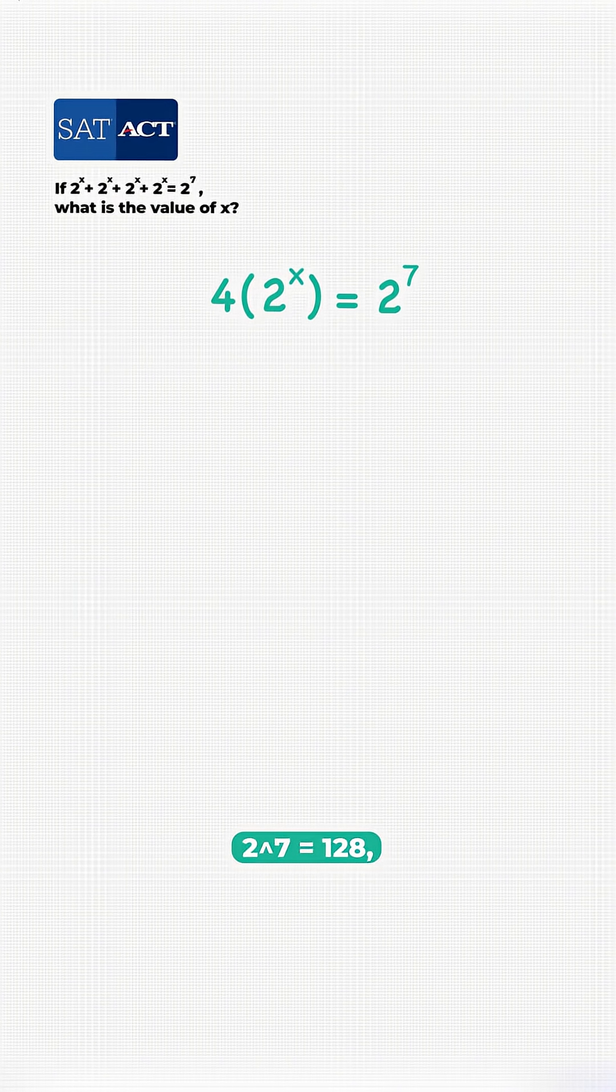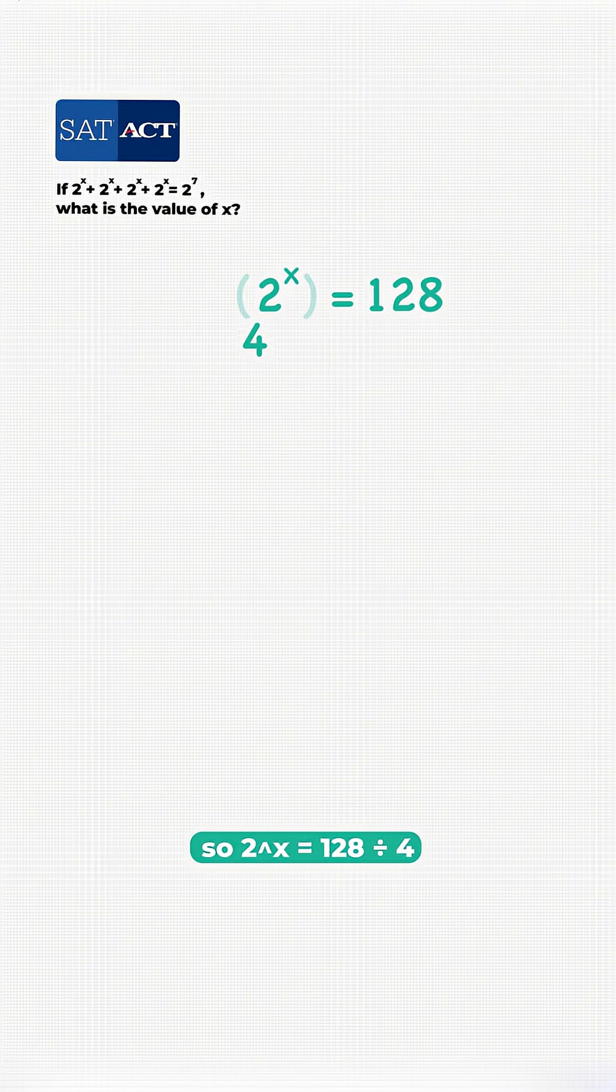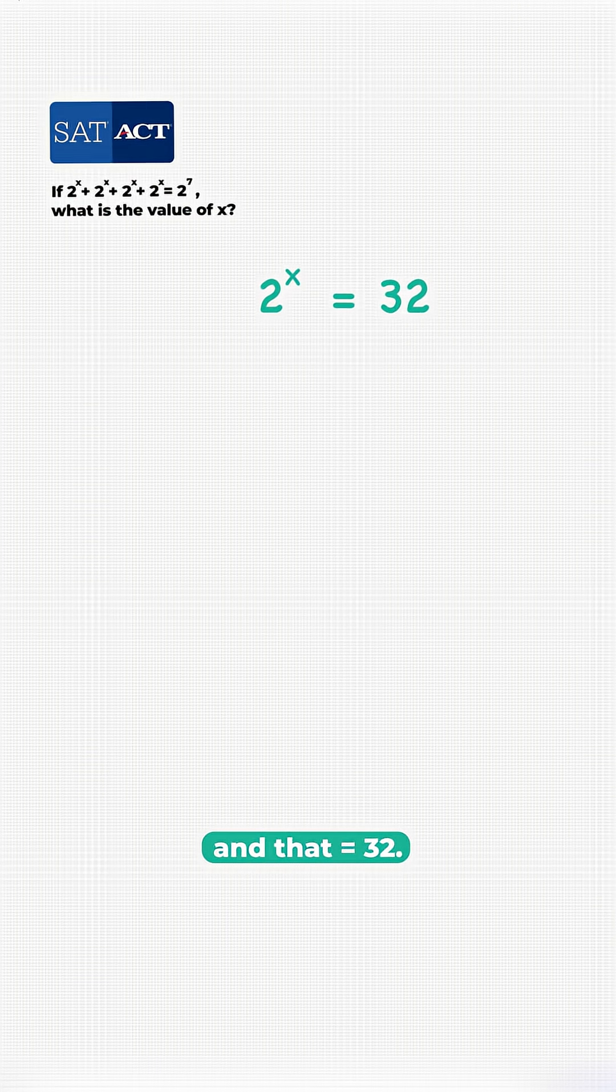Now we're cooking. 2 to the power of 7 equals 128, so 2 to the power of x equals 128 divided by 4, and that equals 32.